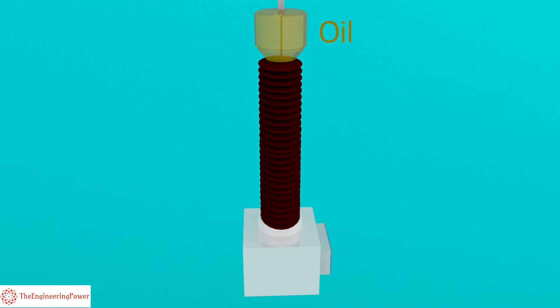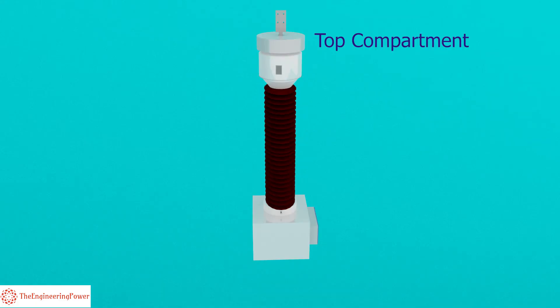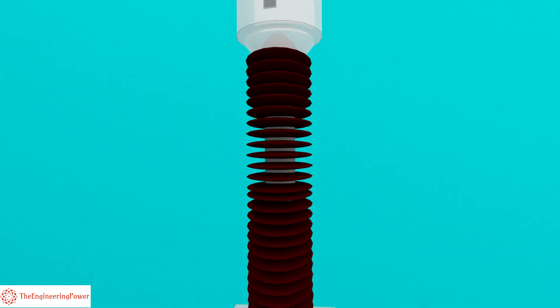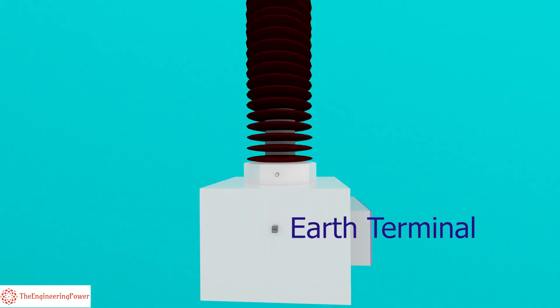The PT is filled with oil for insulation and cooling purpose. The oil can expand due to high temperature and load. So an extra compartment is provided at the top to accommodate the expansion of oil. The body of PT is grounded using an earth terminal at the bottom.